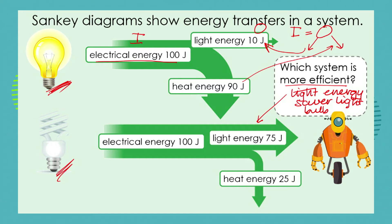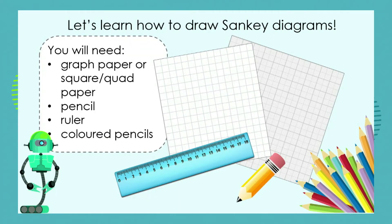The arrows in a Sankey diagram indicate the direction of energy transfer, and the width of the arrow is proportional to the amount of energy. So heat energy at 90 joules has a wide arrow, and heat energy at 25 joules has a much narrower arrow. So how do we draw these diagrams?